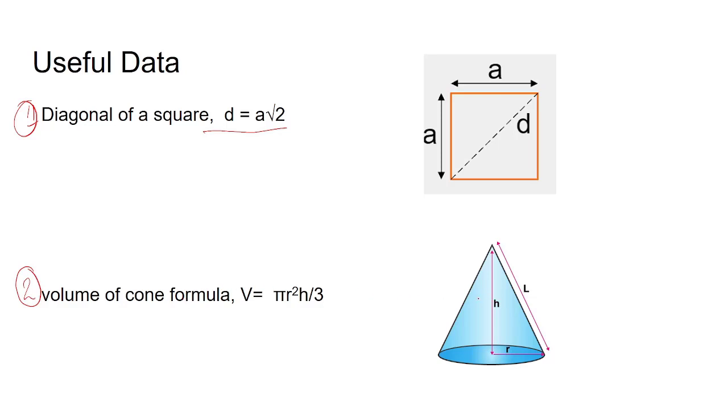Now let's solve this problem. It is given in the question that we have a square of side 1 unit, so each and every side of the square will be 1 unit. So diagonal of this square will be root 2 units.